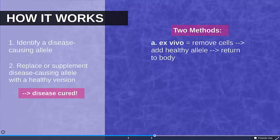There's two methods that this is done. There's ex vivo. This is when you remove the cells from the body, add the healthy allele, and then return the cells to the body.